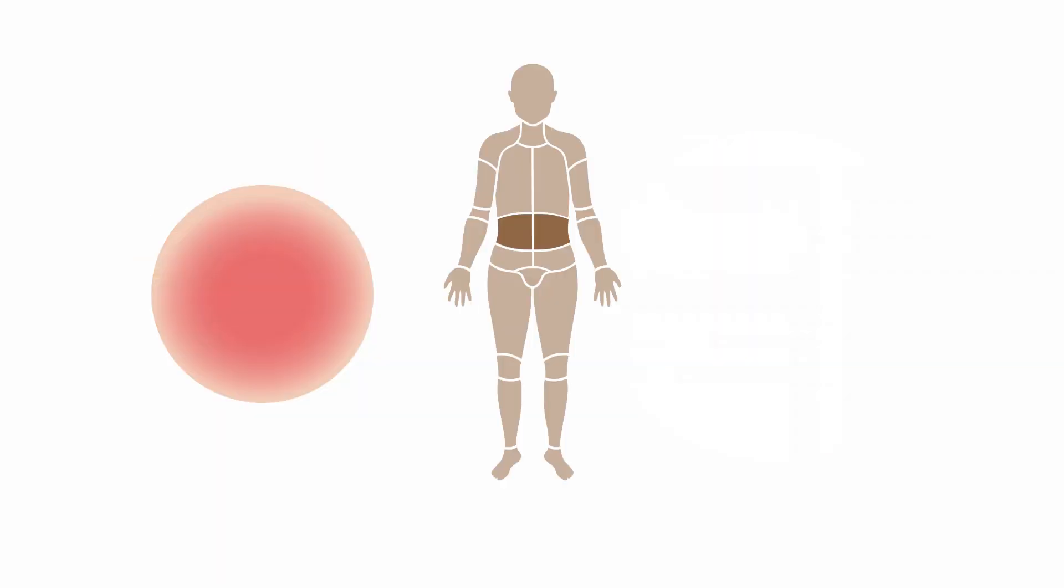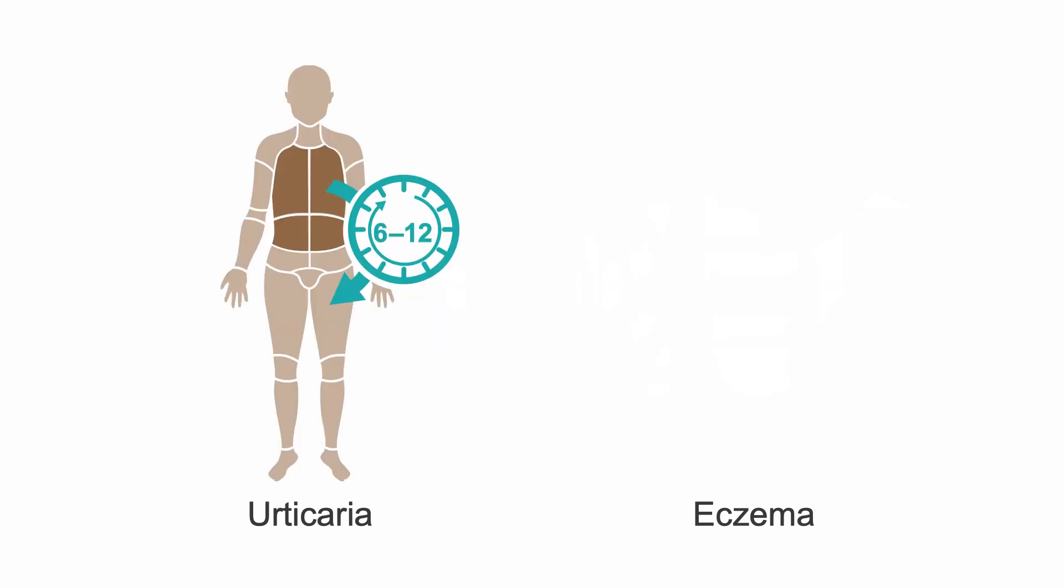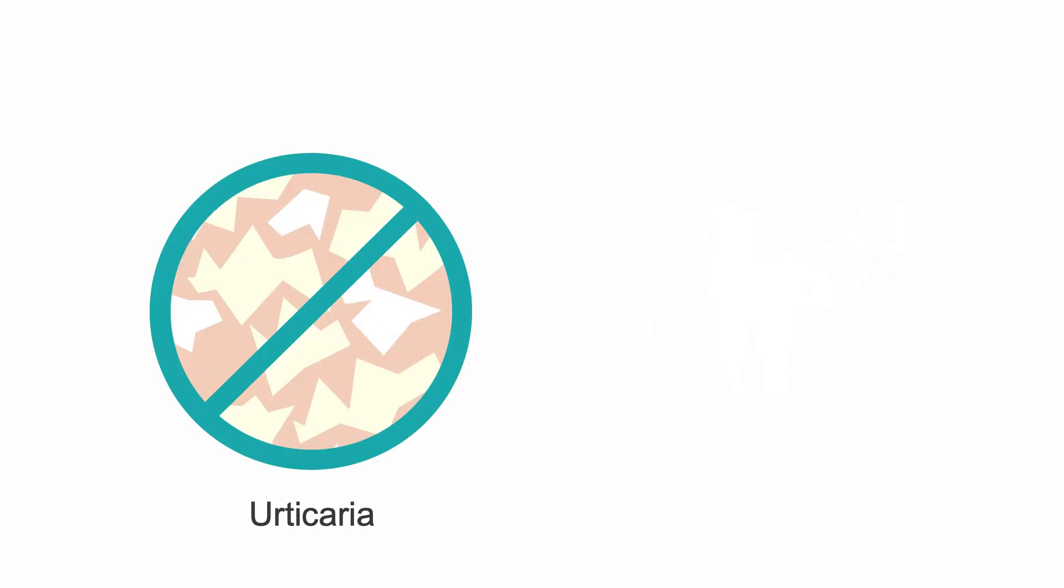Urticaria or hives is a common condition that is often confused with eczema. Both conditions cause the skin to appear red, are symmetrical in distribution, and are very itchy. But there are two key differences that can help you distinguish between them. First, urticaria is a migratory skin condition, so it moves around within 6 to 12 hours, whereas eczema is a more stationary condition. Second, urticaria has a non-scaling smooth surface, whereas a scaling or rough surface is a characteristic sign of eczema that is never found in patients with urticaria.